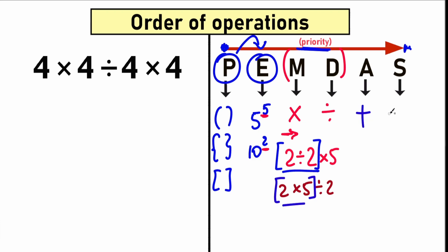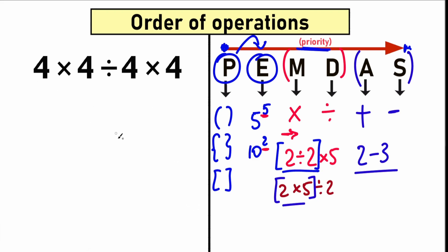The last step in PEMDAS is addition and subtraction. In 99% of cases, people don't really need to worry about this order anymore at this point, because when we only have addition and subtraction remaining, like 2 minus 3, we can easily solve it in a few seconds. And I hope you understand — that was a quick overview of the PEMDAS order of operations. Now, how can we apply this correct concept and correct order of operations to this question?